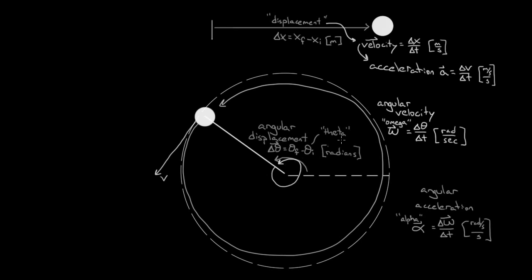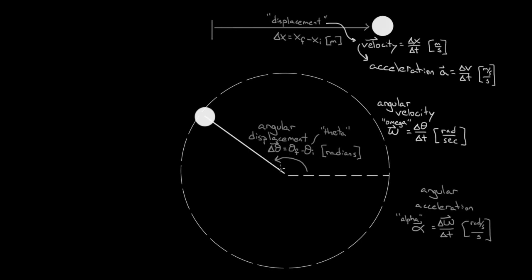If you were just going to use angular velocity, note that every point on the string, including the ball, moves through the same amount of angle in the same amount of time. They don't move through the same amount of meters per second, but they do move through the same amount of radians per second. When the ball has rotated through two pi radians, every point on the string has also rotated through two pi radians. So every point on a rigid object has the same angular displacement, the same angular velocity, and the same angular acceleration.